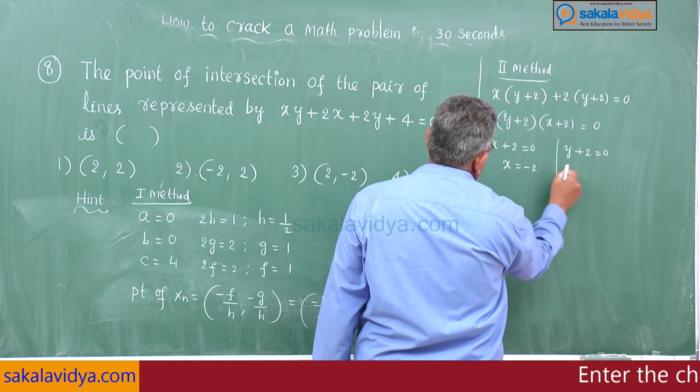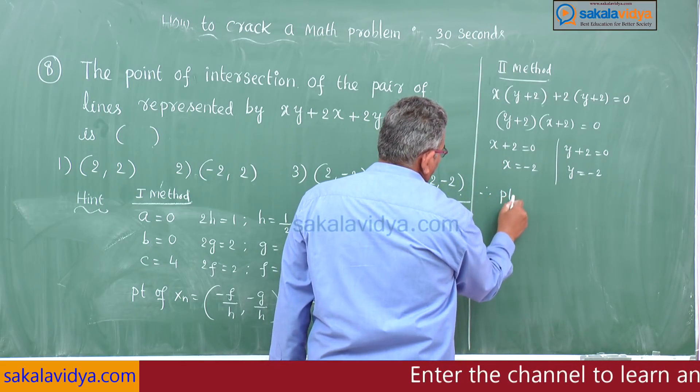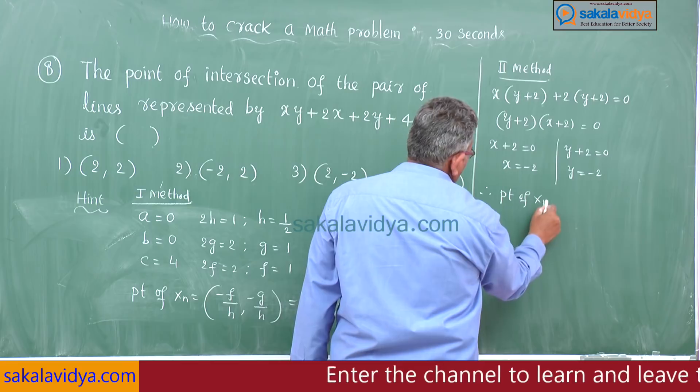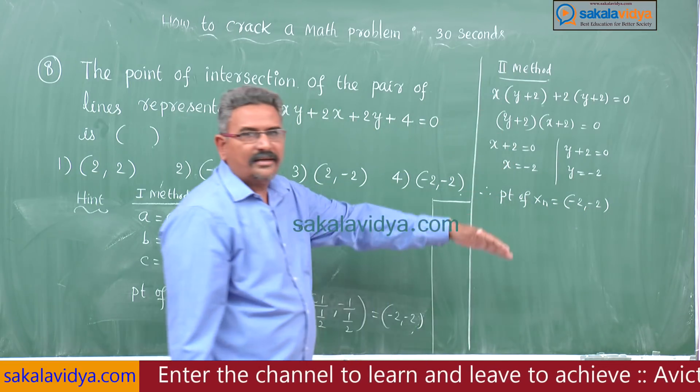x is equal to minus 2, y is equal to minus 2. Therefore, point of intersection is minus 2 comma minus 2. This is the second method.